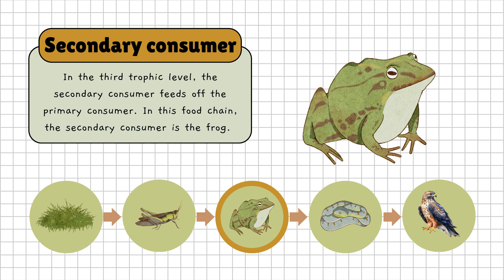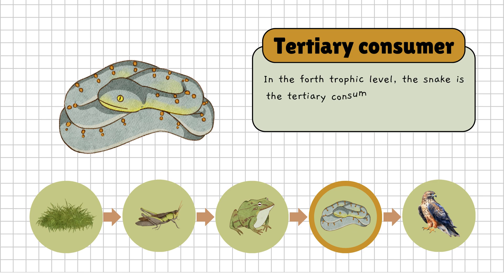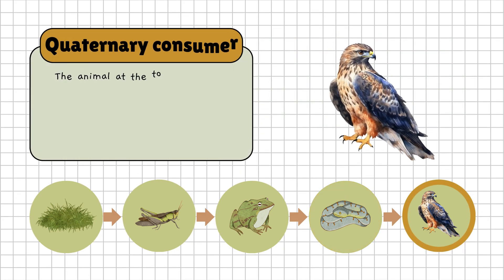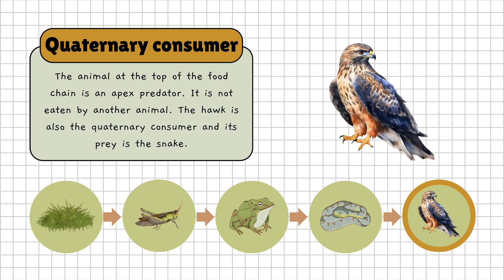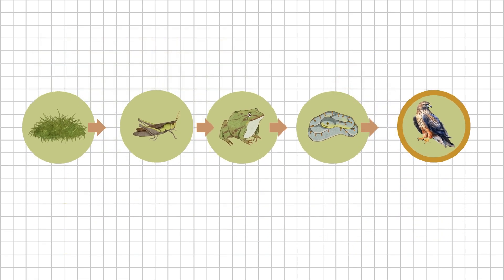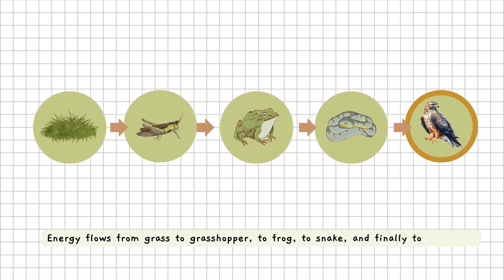Then, at the fourth level, we have the tertiary consumer. Here, it's a snake that feeds on the frog. The snake is the predator, and the frog is its prey. Finally, at the top of our food chain, we have the quaternary consumer — also called an apex predator because it isn't eaten by anything else. In this example, the hawk is our quaternary consumer, and its prey is the snake. And just like that, we have a complete food chain. Energy flows from grass to grasshopper, to frog to snake, and finally to the hawk.